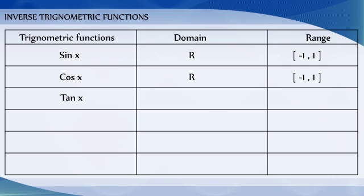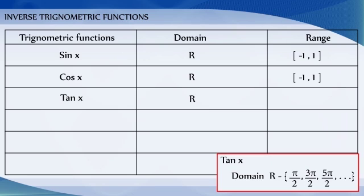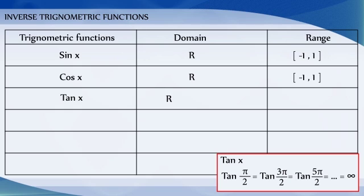The domain of the tangent function is the set of all real numbers except the odd multiples of pi by 2, because for all odd multiples of pi by 2, the value of the tan function is infinity. Therefore, the domain of the tangent function is the set of all real numbers except the set of all x such that x is equal to (2n+1) times pi by 2, where n belongs to integers, and the range of the tangent function is the set of all real numbers.